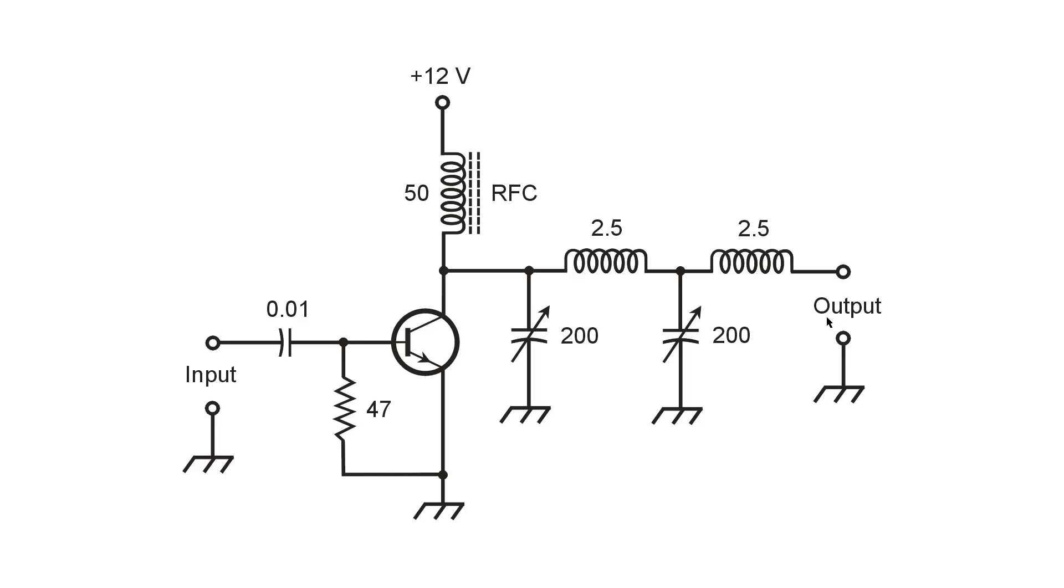Call sign W1GV, whiskey one, good vibrations. I don't use amplifiers at the output. I am a low power QRP, Quebec Romeo Papa person, or quasi-QRP. I like to run about 10 watts normally.